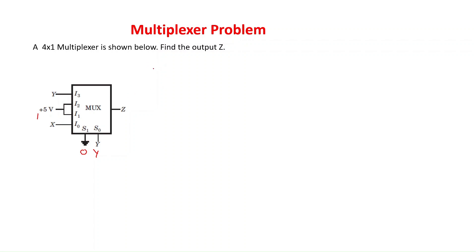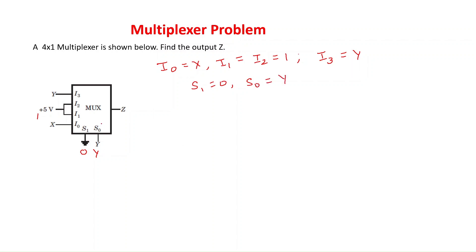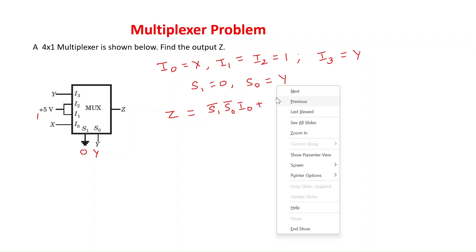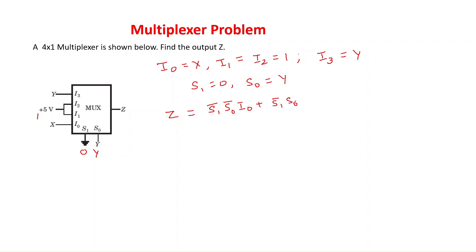Let me note down all the input values. I0 = X, I1 = I2 = 1 (high level), and I3 = Y. Select lines: S1 = 0 (grounded) and S0 = Y. This is a 4×1 multiplexer because there are 4 input lines and 1 output line. The expression for a 4×1 multiplexer is: Z = S1'S0'I0 + S1'S0·I1 + S1·S0'·I2 + S1·S0·I3.